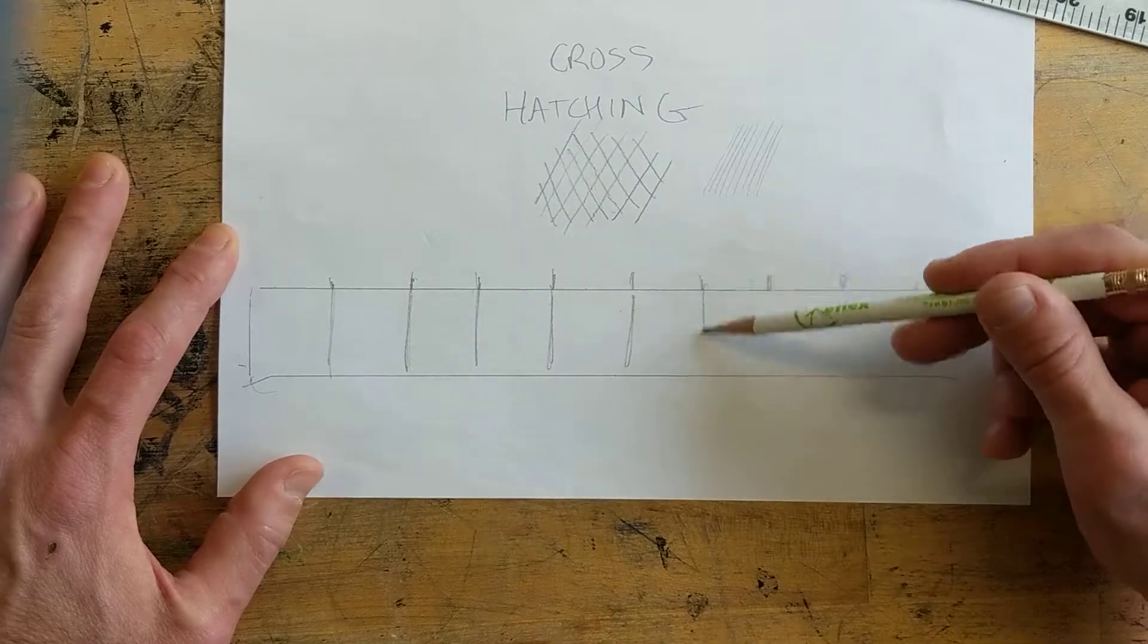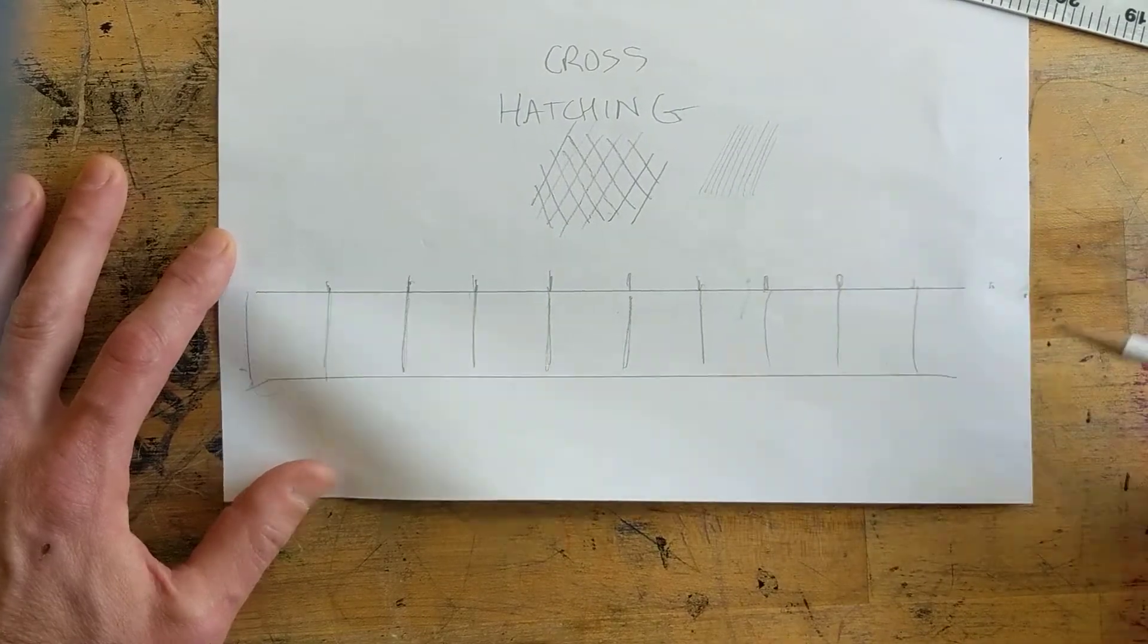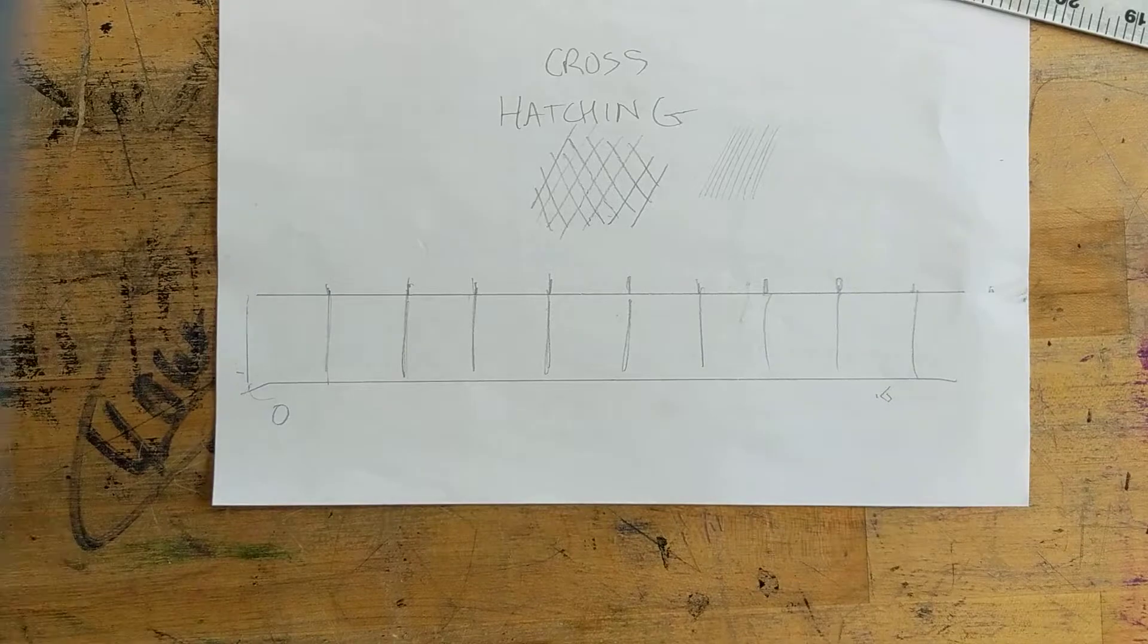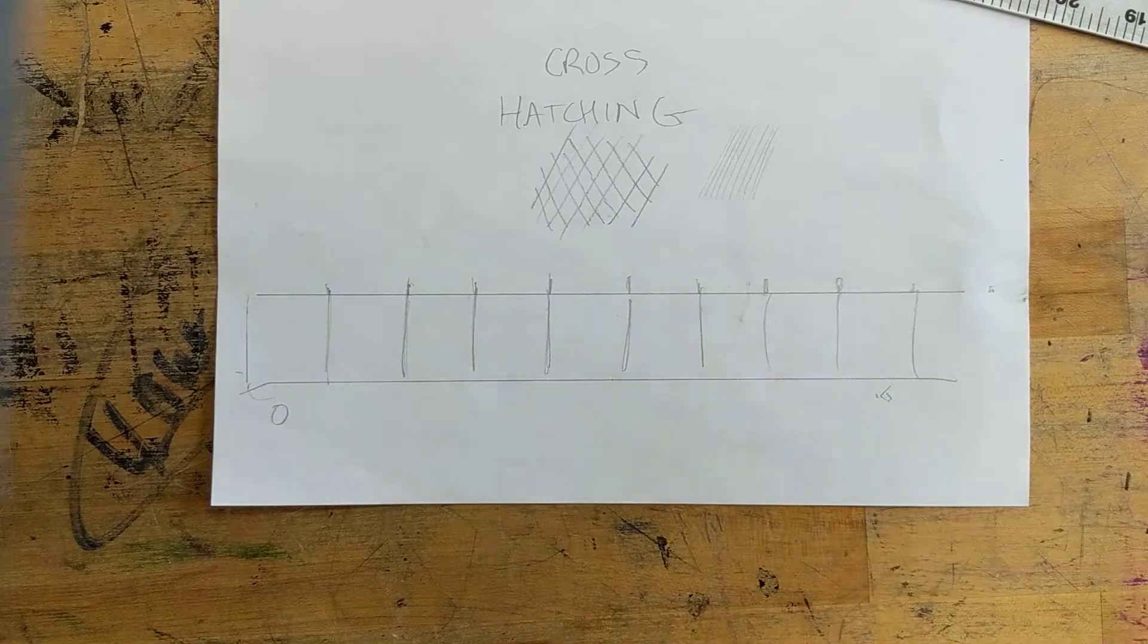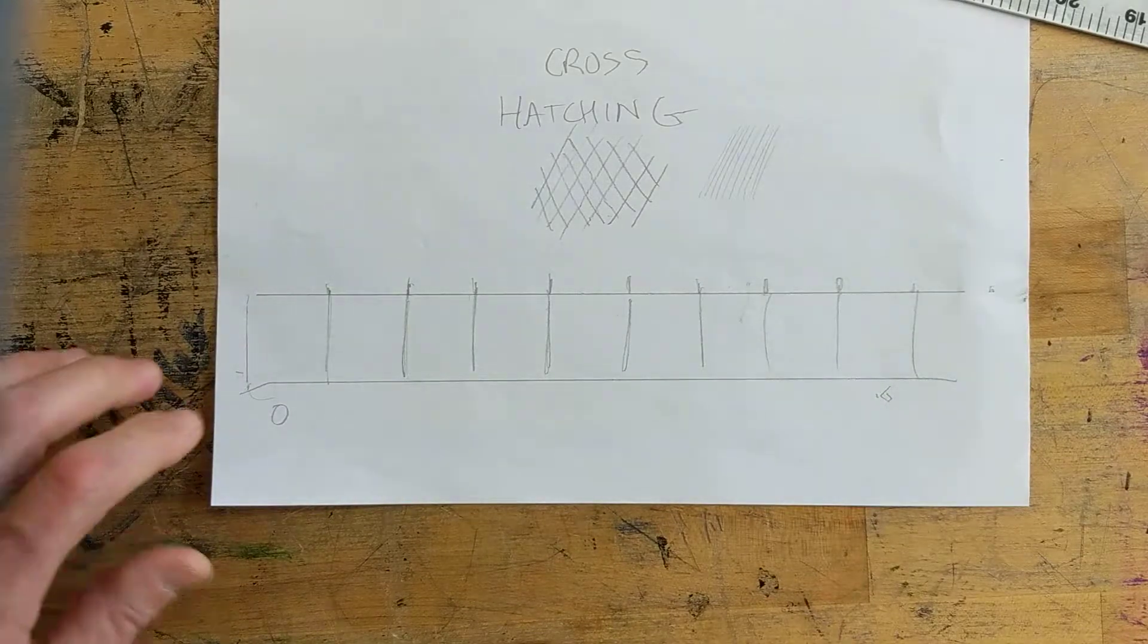And what we're going to do is we're going to number these boxes. I'm going to do a quick zero all the way to ten. All right, and so what we want to do is each box tells you how many sets of lines.